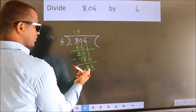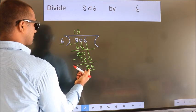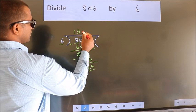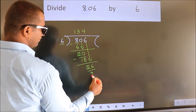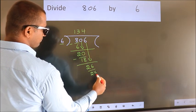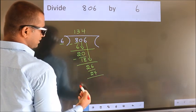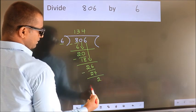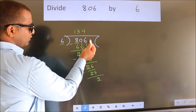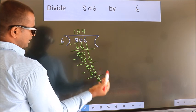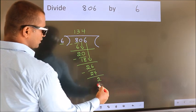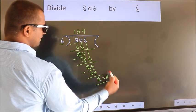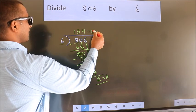A number close to 26 in the 6 table is 6×4=24. Now we subtract — we get 2. No more numbers to bring down, so we stop here. This is our remainder. This is our quotient.